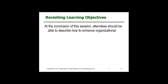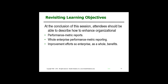To revisit the learning objectives for this session: we talked about performance metric report outs so we can have metrics that indicate what might happen in the future if we don't do something different. We want to have whole-enterprise metric performance reporting, ideally using this form of reporting. It's not going to happen tomorrow, but it's something you might look at for down the road. And how do you have improvement efforts so the enterprise as a whole benefits?